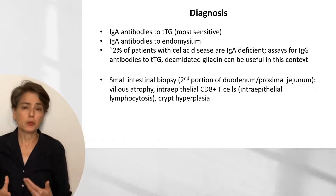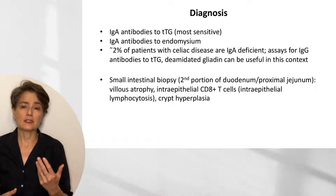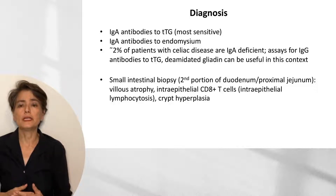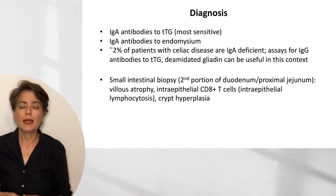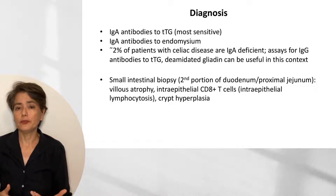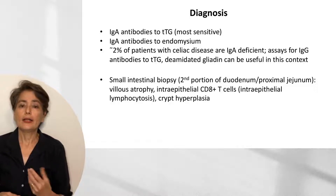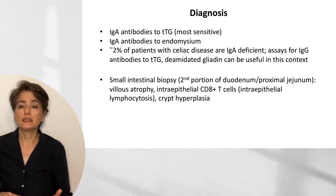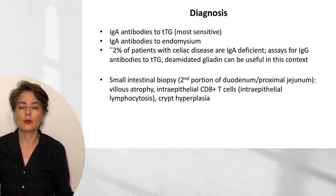The endoscopist will biopsy the second portion of the duodenum and proximal jejunum. What we will see on the glass slide will be villus atrophy, intraepithelial CD8-positive T-cells — that intraepithelial lymphocytosis — and crypt hyperplasia.